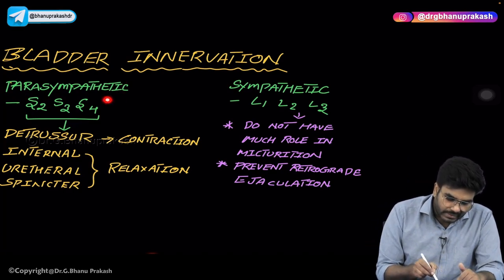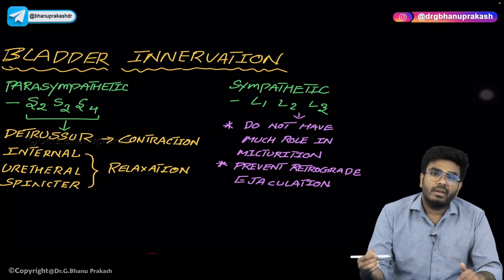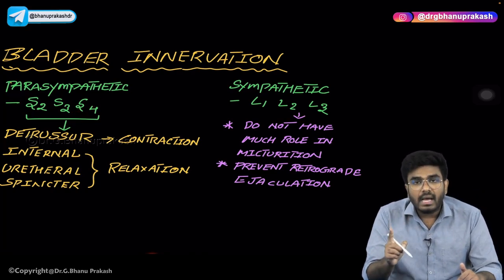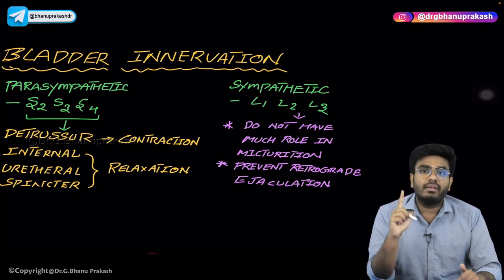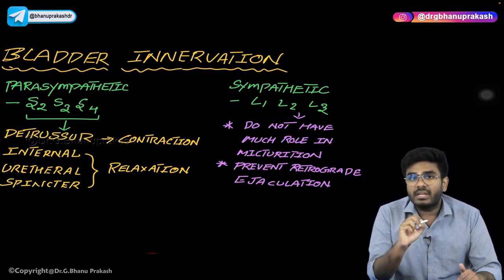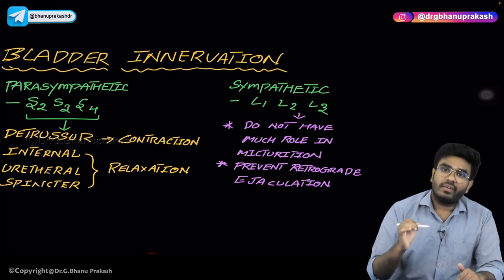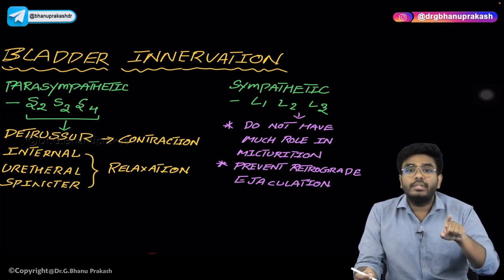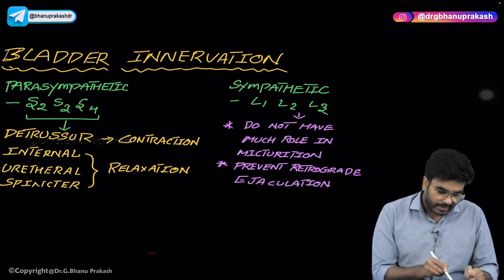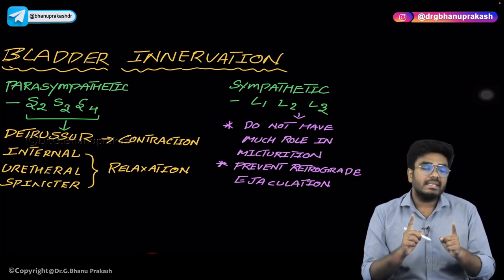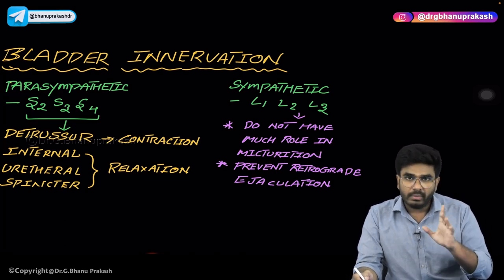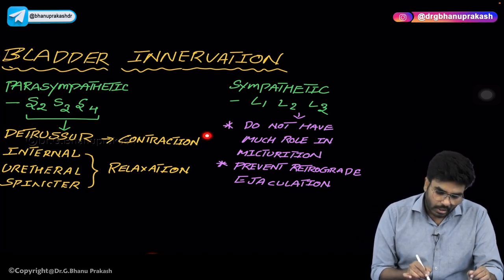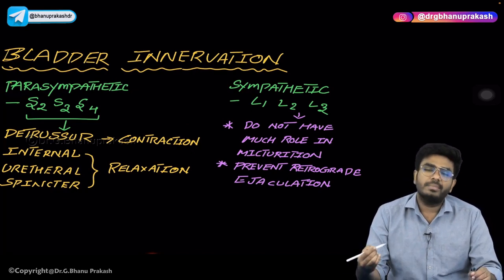The parasympathetic innervation to the bladder comes from S2, S3, and S4 spinal nerves. These parasympathetic fibers innervate the detrusor muscle around the urinary bladder. This parasympathetic innervation from S2, S3, and S4 helps in contraction of the urinary bladder, facilitating micturition.